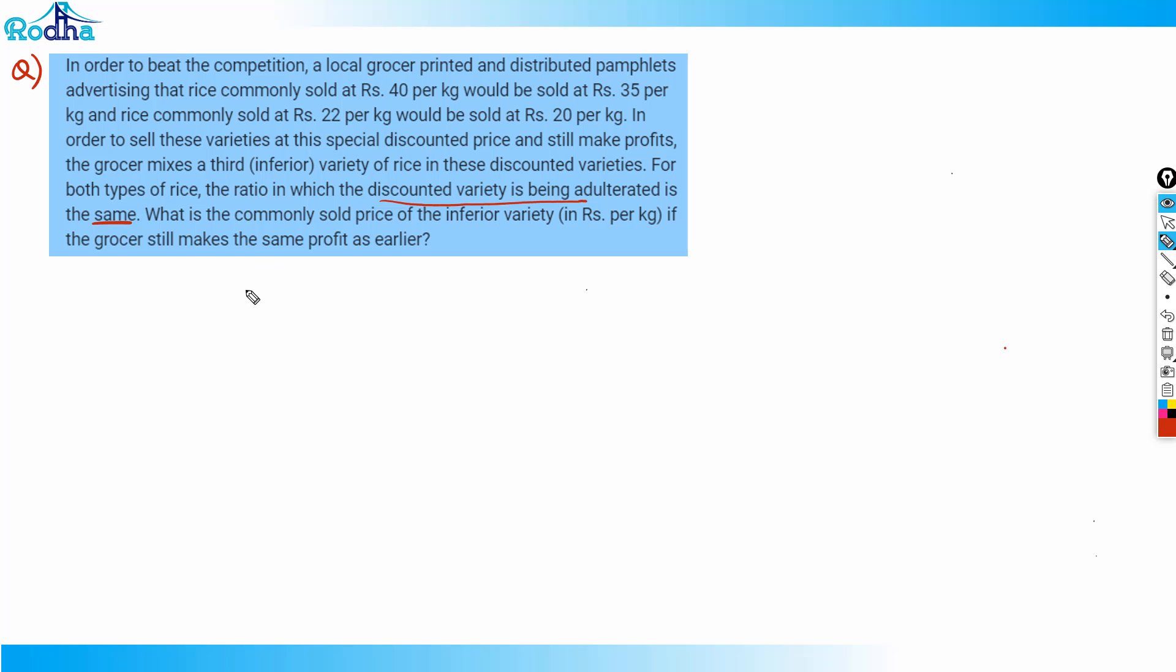Let me assume some variables because we don't have anything here. Let's assume that the grocer sells ordinarily one kg of each type of rice. So he sells one kg of each type of rice. Now he's adulterating the rice in such a way that he uses, let's say, y kg of the original variety.